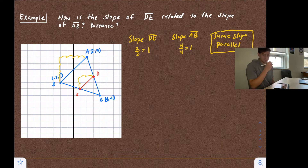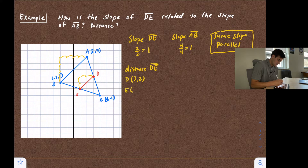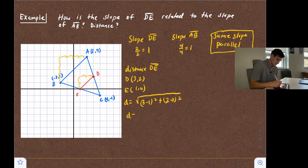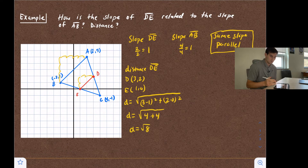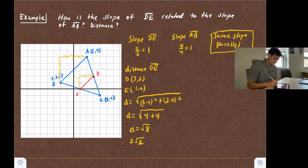Now let's find the distance of DE. Point D is located at (3, 2) and point E is located at (1, 0). Using the distance formula: the square root of (3 minus 1) squared plus (2 minus 0) squared. That gives us the square root of 4 plus 4, which is the square root of 8. Simplifying by pulling out a factor of 4, we get two root two. So the distance of DE is two root two.